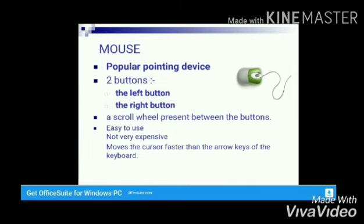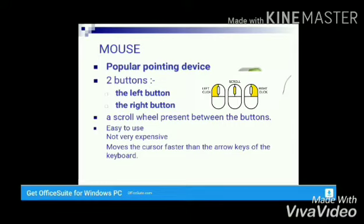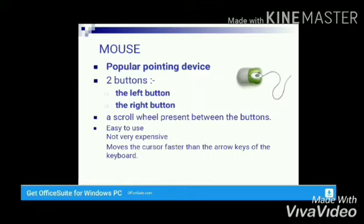The next input device is the mouse, which is the most commonly used pointing device on the computer screen. It has two buttons — the left button and the right button — and there is a scroll wheel present between the buttons. Its advantages are that it is very easy to use, not very expensive, and moves the cursor faster than the arrow keys on the keyboard.